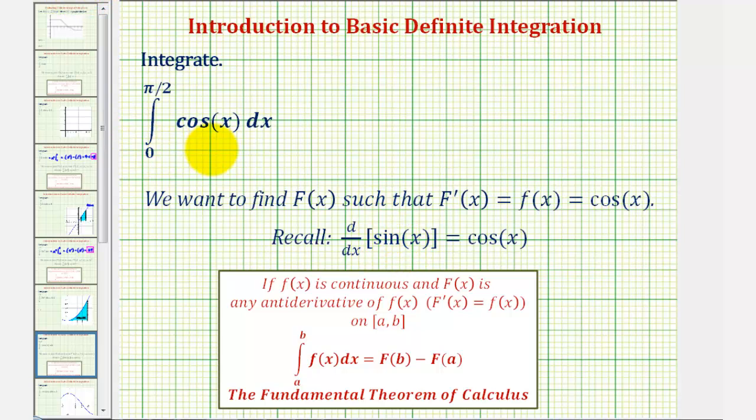So to evaluate this definite integral, we'll use the antiderivative function sine x, where we'll evaluate this at the upper limit of integration of pi over two, then at the lower limit of integration of zero, and then we'll find the difference.